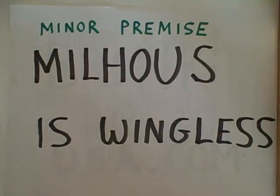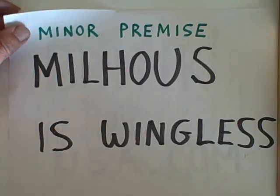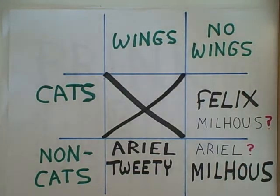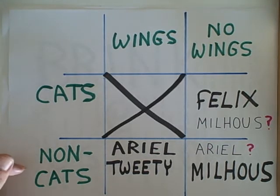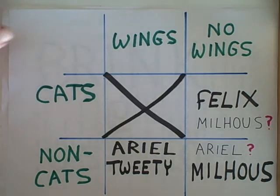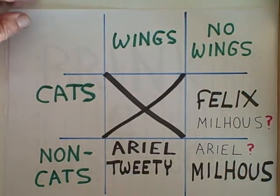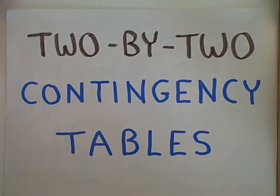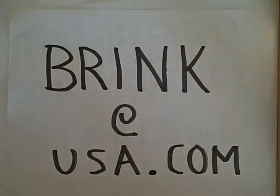Let's try another minor premise that will not yield a valid conclusion: Milhouse is wingless. We know we've got to put Milhouse in the no-wings column, but we don't have enough information to know where to put him. Is he a blue-haired boy, in which case he would be a non-cat? Or is Milhouse a blue-haired cat wearing glasses? We don't have enough information about Milhouse. So that's how we use 2x2 contingency tables to help us figure out deductive syllogisms. If you have any comments about these videos, feel free to contact me.